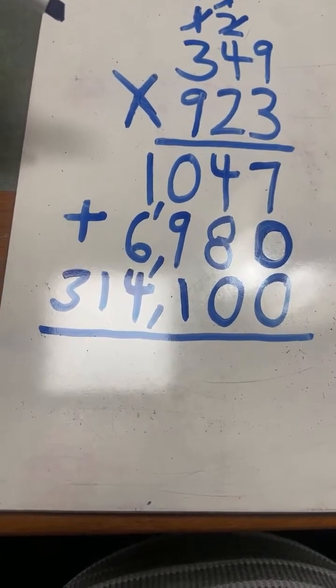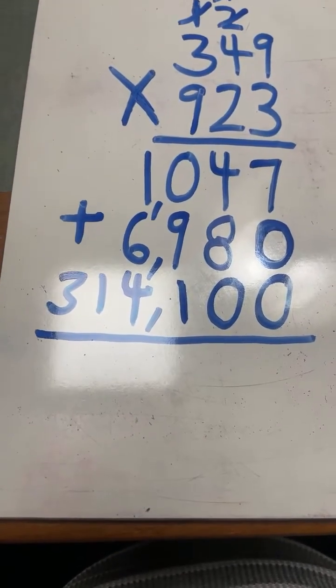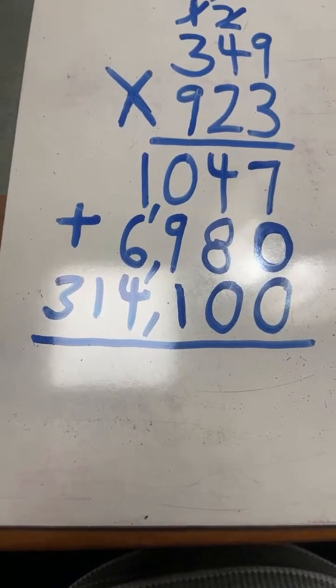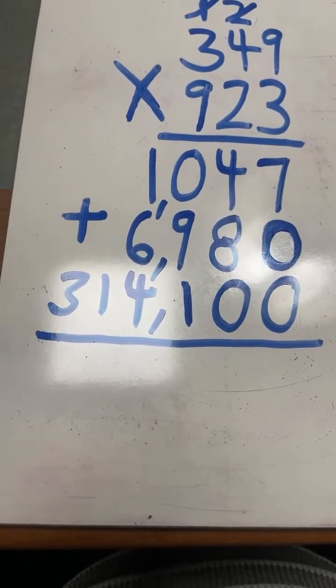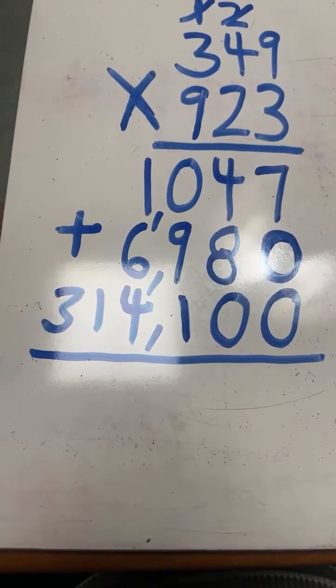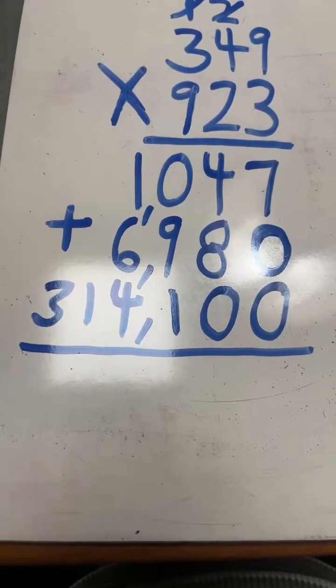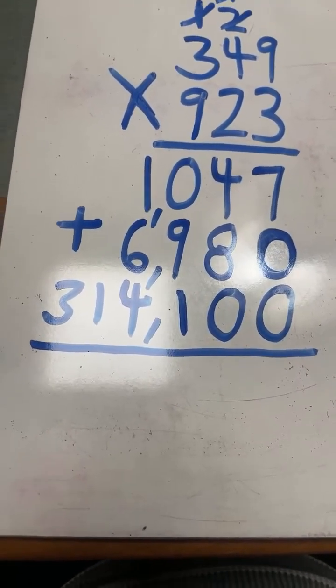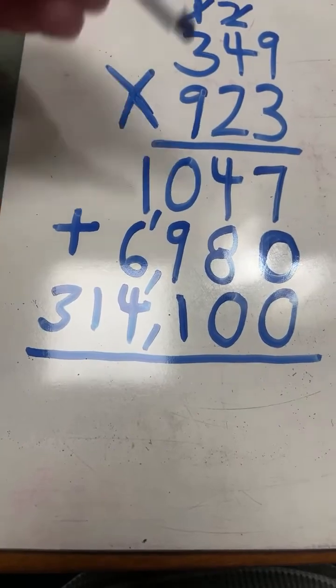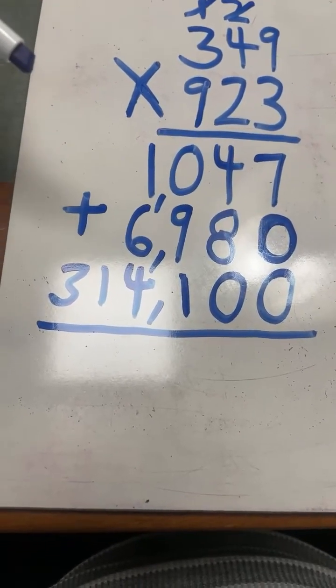So with 3 digit multiplication, remember, if you don't have 3 numbers to add together, it means you did something wrong. That's how I caught myself and knew that I was making a mistake in that last problem. For 3 digit by 3 digit multiplication, you should have 3 numbers that you're adding together to find the final answer.